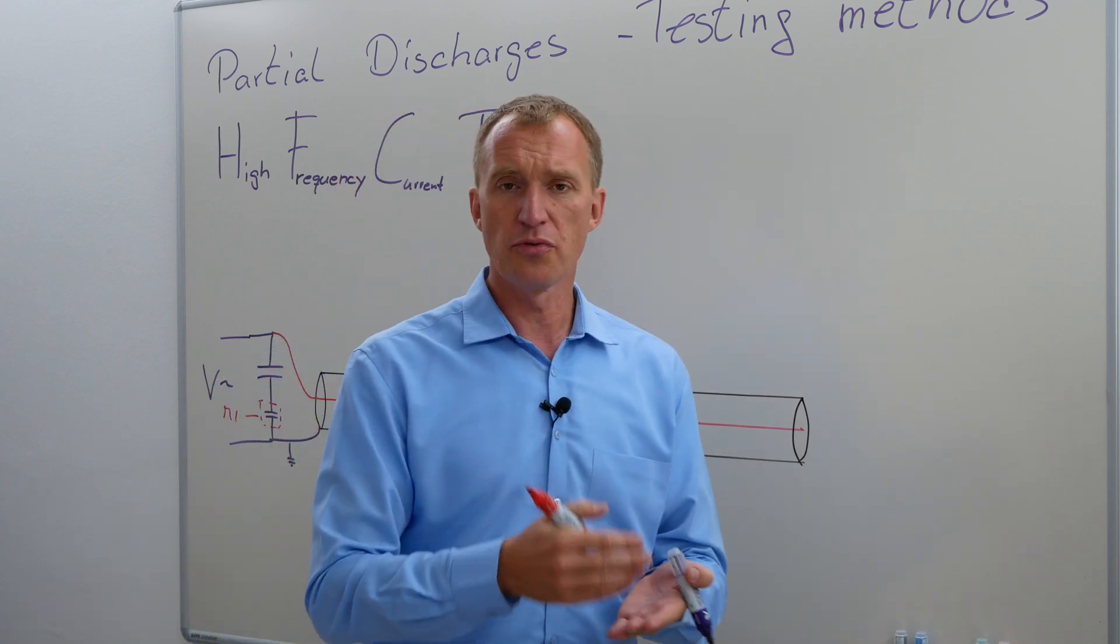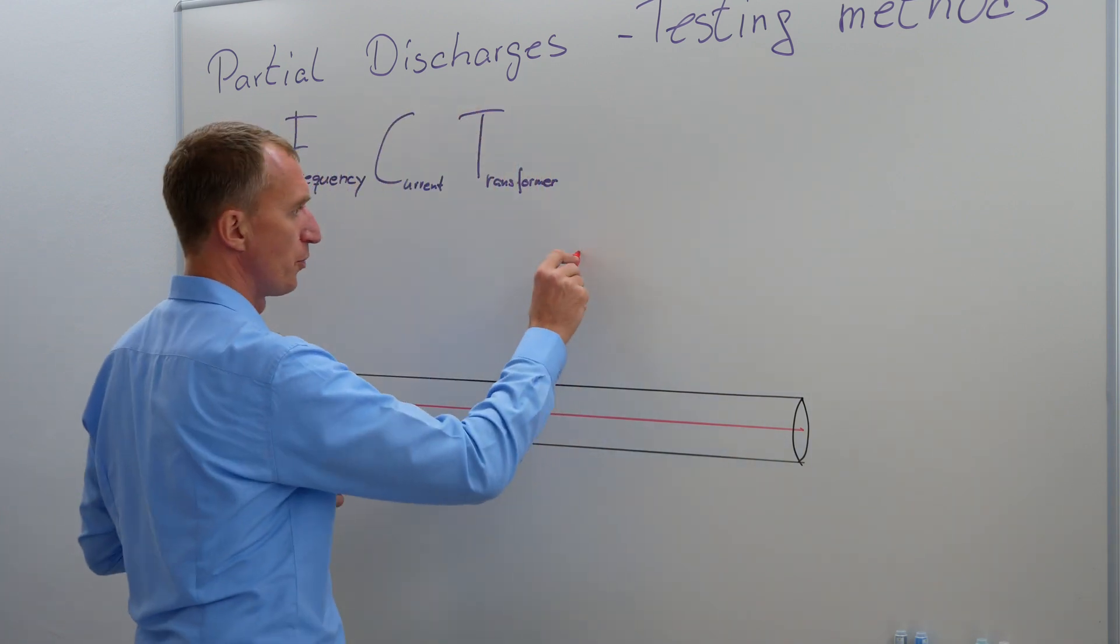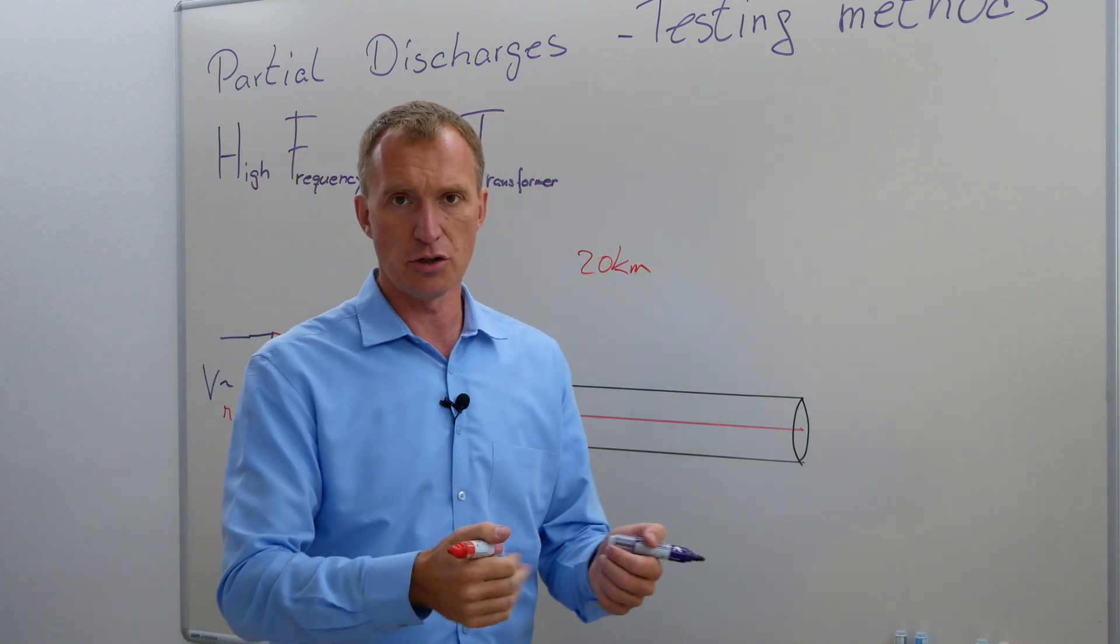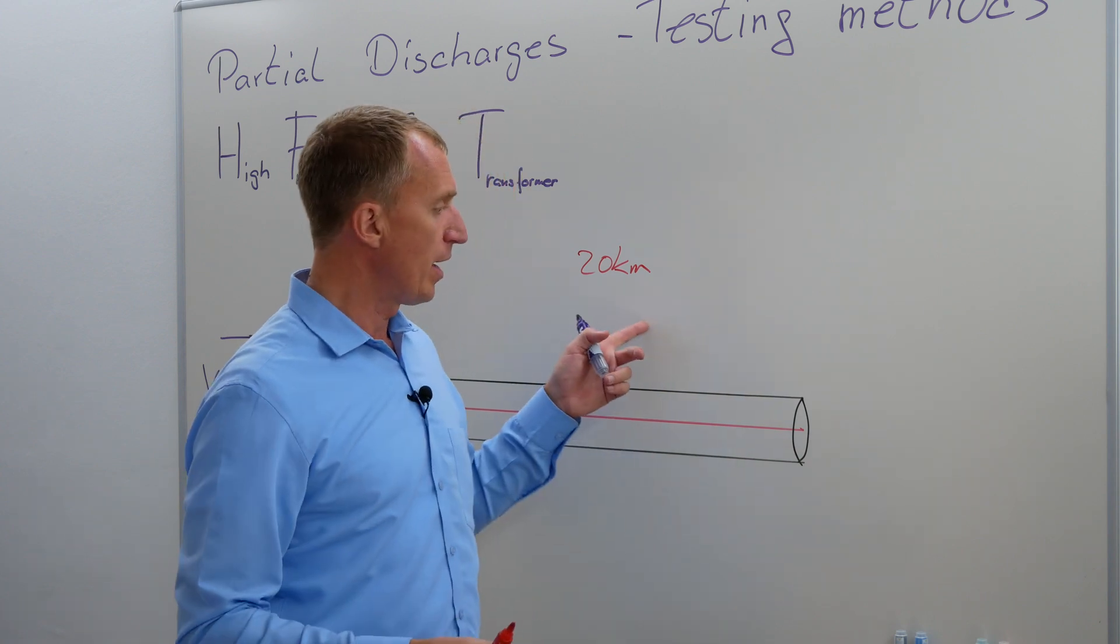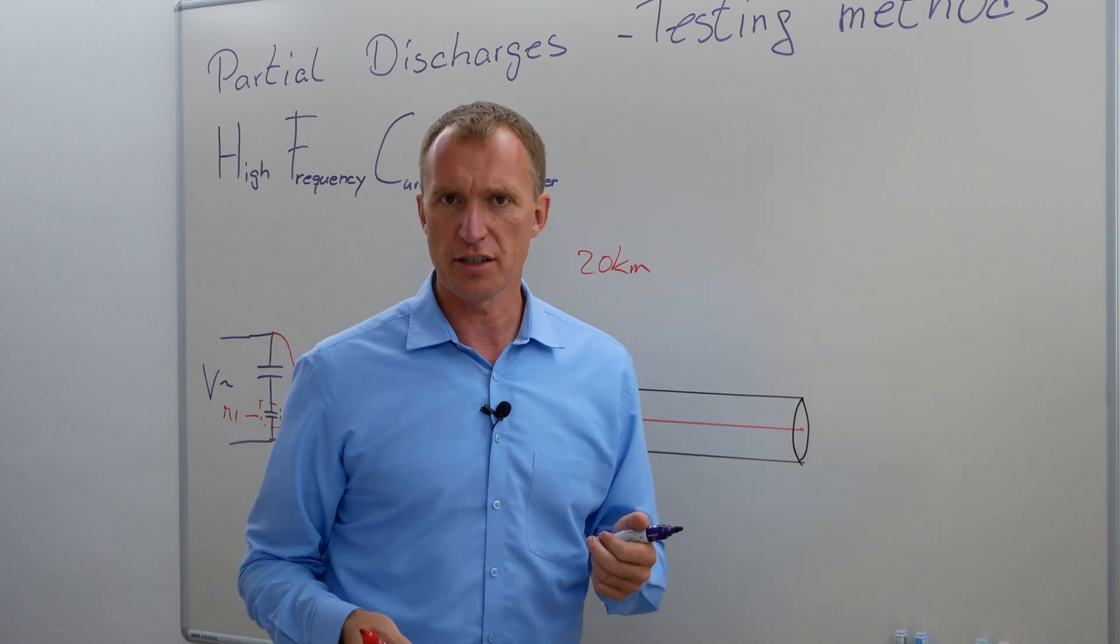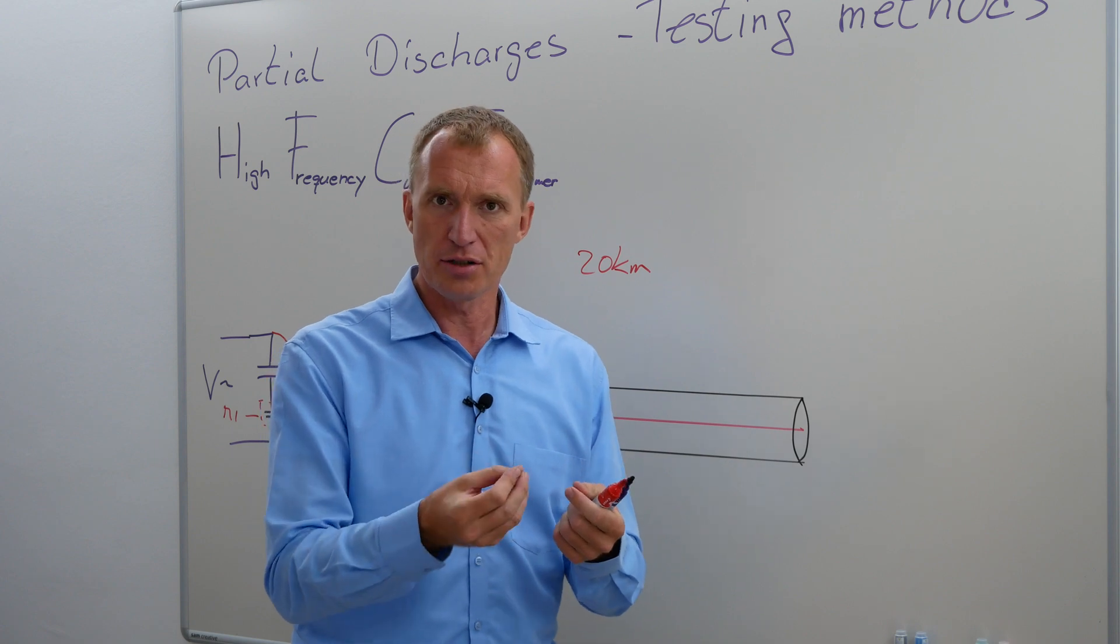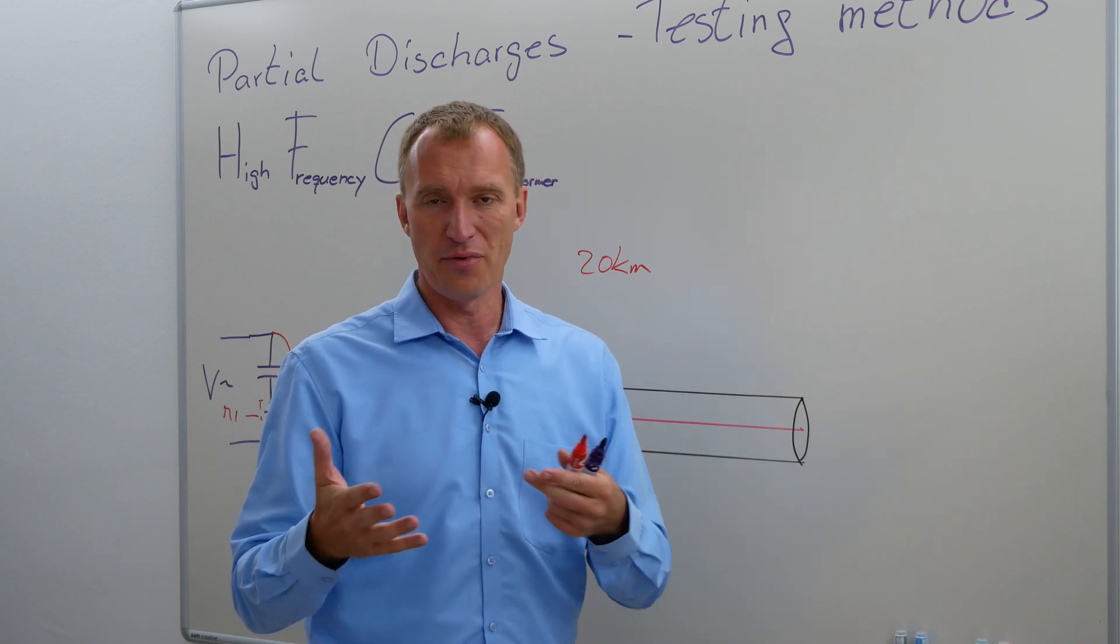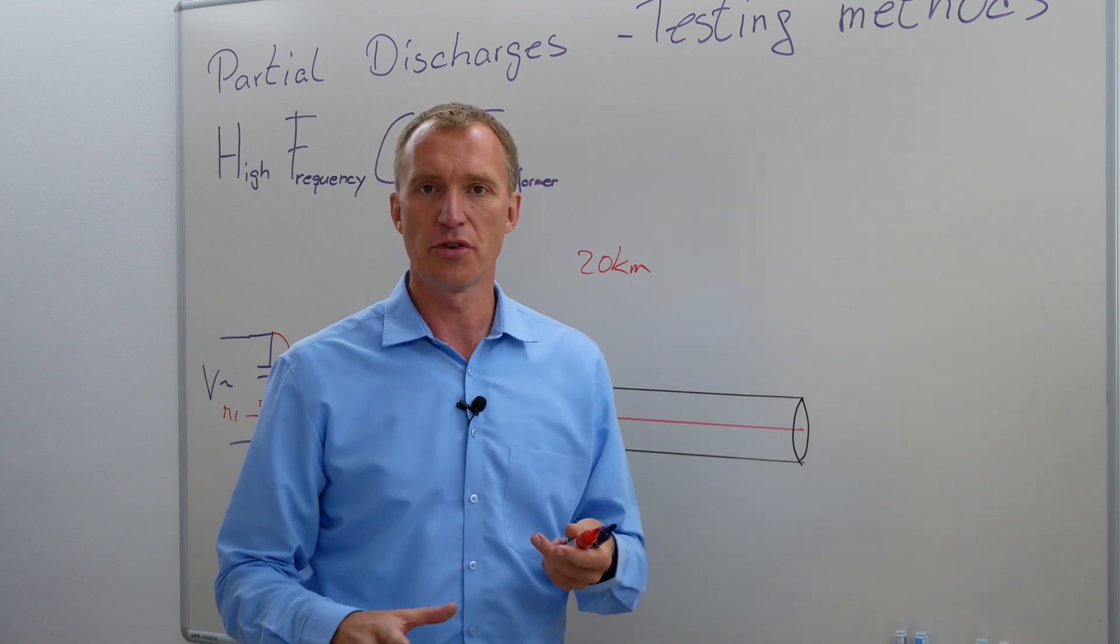So imagine the following thing. You're trying to find partial discharges in a joint. Let's say the cable is 20 kilometers long. I have done that, testing on 20 kilometer long cables, high voltage cables, 400 KV. And in this 20 kilometer cable, we had something like 26 joints or something like that. And you are trying to measure partial discharges which are really, really small, in the area of 10, 5 picocoulomb. Sometimes you would be even happy to see 20 or 30 picocoulombs.